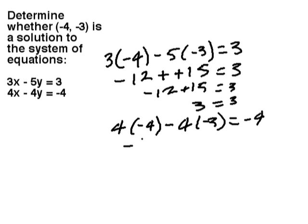4 times negative 4 is negative 16, minus 4 times negative 3 is a negative 12, equals negative 4. Again, I convert these to a positive sign. I've got negative 16 plus 12. That's negative 4 equals negative 4. It also checks in the second equation.